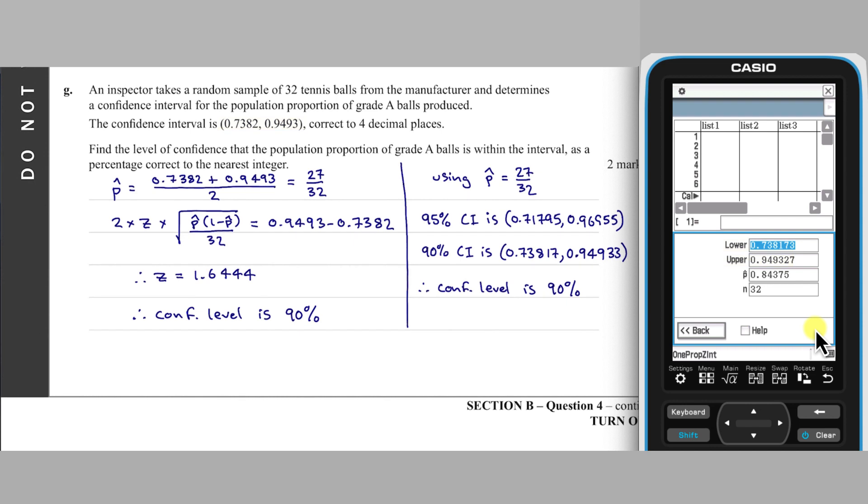As the question is worth two marks, we need to make sure we have provided sufficient evidence of our thinking. In this case, a calculation of P-hat and evidence of finding a confidence interval at a level other than 90%, as well as at the 90% level, should do it.